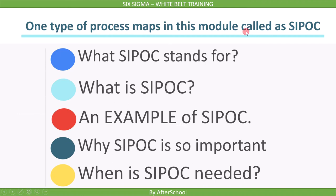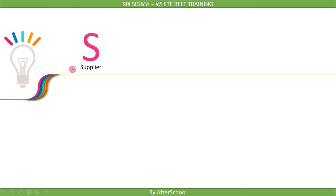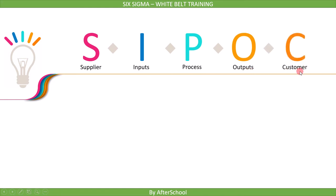We will cover one type of process map in this module called SIPOC. The topics we will cover are: what does SIPOC stand for, what is SIPOC, an example of SIPOC, why SIPOC is so important, and when is SIPOC needed.